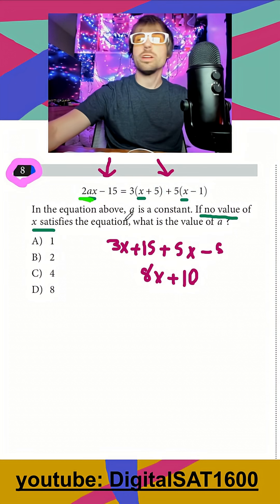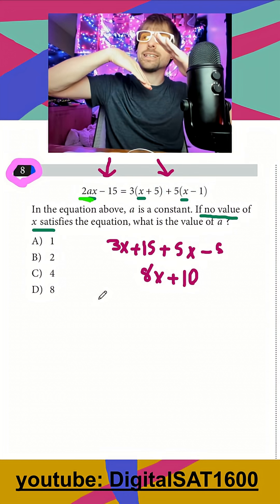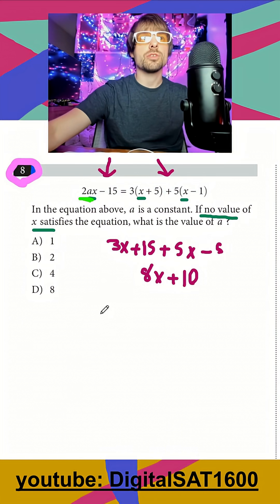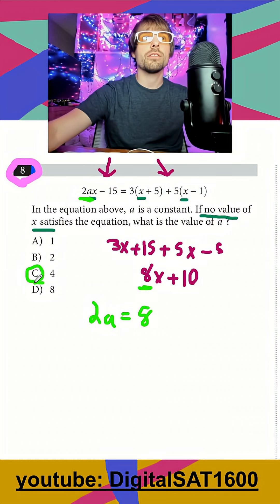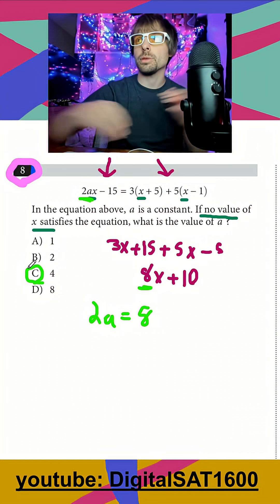Our slope from equation one is going to be 2a. So again, because there's no solution, my two lines have to be parallel to each other. So I would say 2a from line one is going to be equal to my slope from line two, which is just going to be 8. And my a would have to be 4 for these to have the same slope and therefore be parallel to each other.